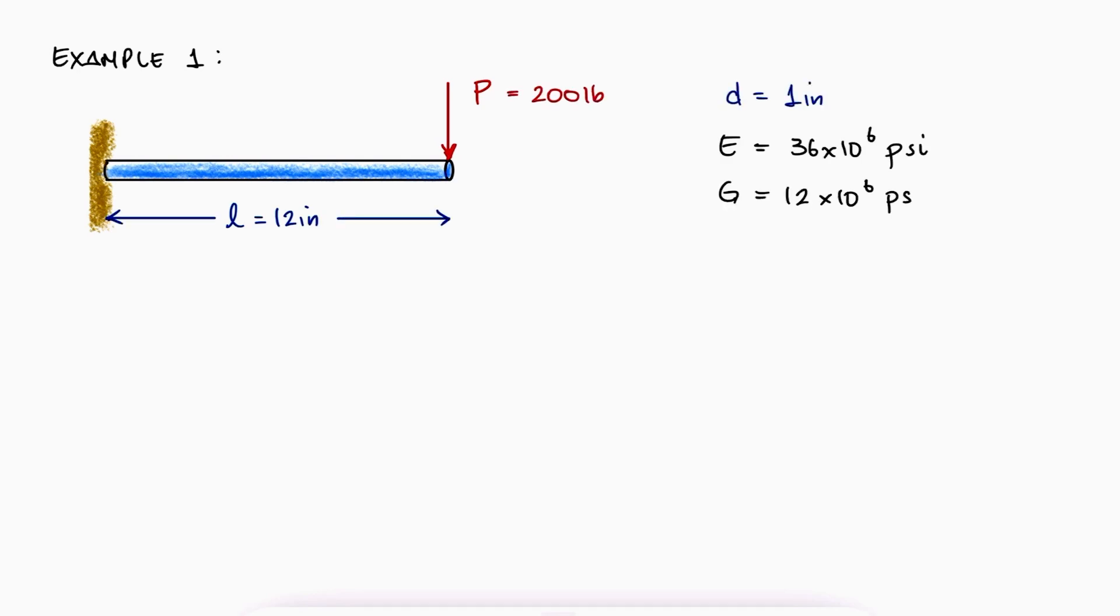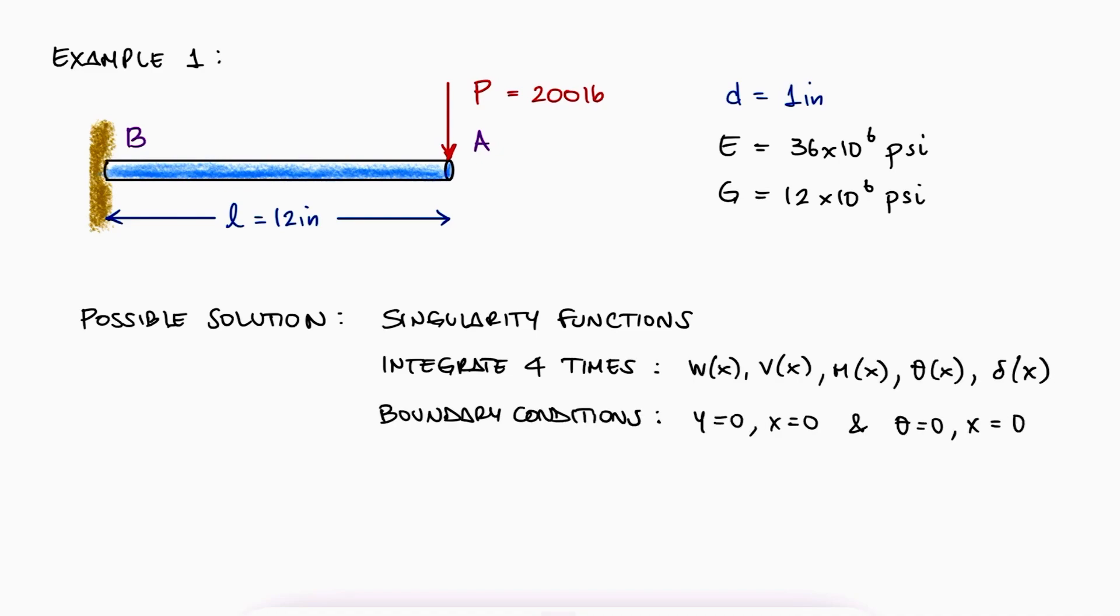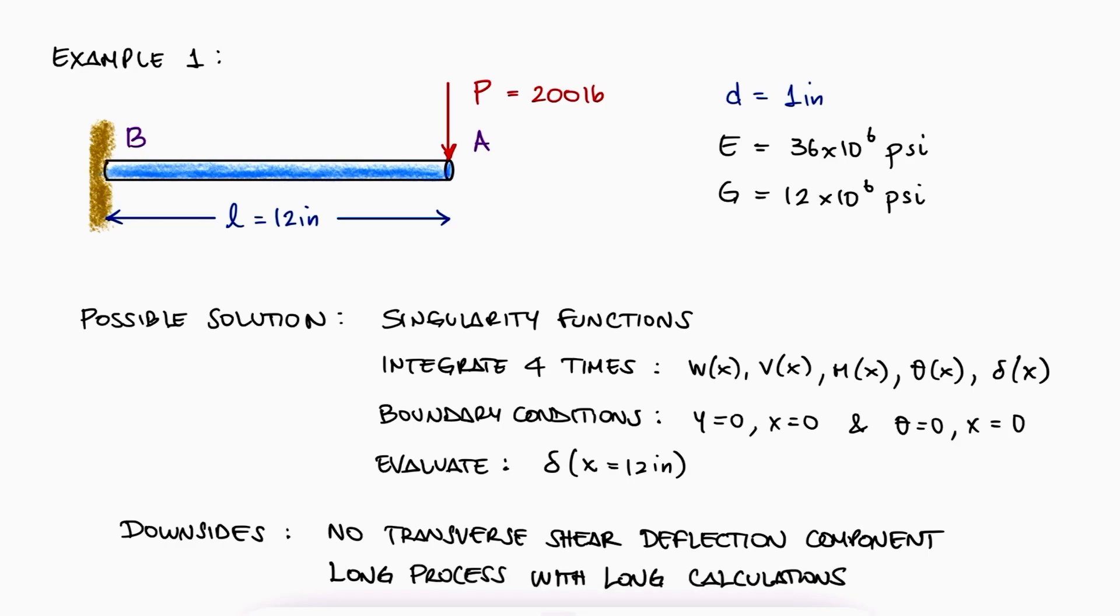Let's take a look at one of the simplest examples for using Castigliano's theorem, where a circular cantilever beam is subjected to a downward load p. If we wanted to know the deflection at point a, we could use the singularity functions we studied in another video, integrate 4 times, and use this structure's boundary conditions to find that deflection. Of course, that method would be easy for this simple example, but it would also not include the deflection due to the transverse shear. For more complex structures, that process would be several times longer than using Castigliano's theorem.